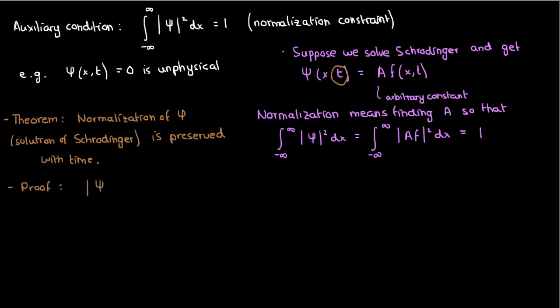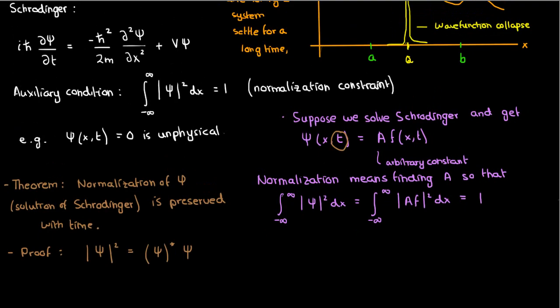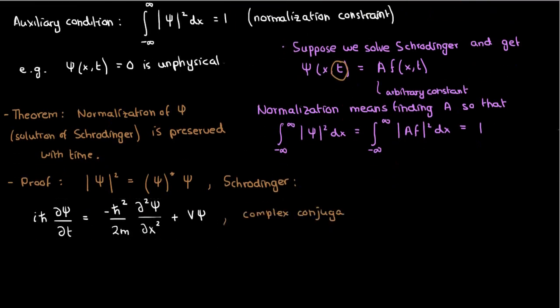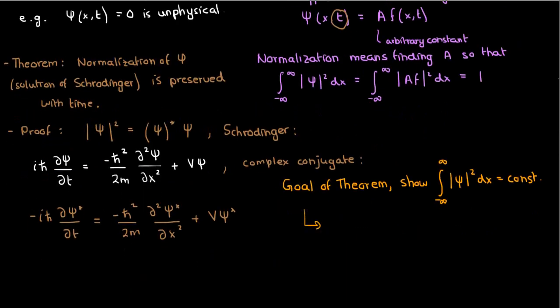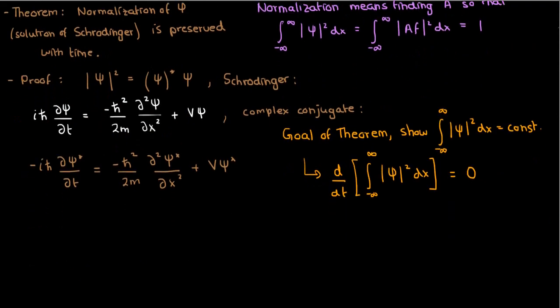Recall that the norm squared of a wave function is just the complex conjugate of that wave function times the wave function. The complex conjugate is there because wave functions are generally complex. If we go back to Schrödinger's equation, the complex conjugate of the equation would have all the psi's turned into their conjugates and all the imaginary terms with their sign switched. The goal of the proof is to show that this normalization integral doesn't change with time — the way to do that is to take the time derivative. If we can show that the time derivative of the normalization integral is zero, our proof is complete.